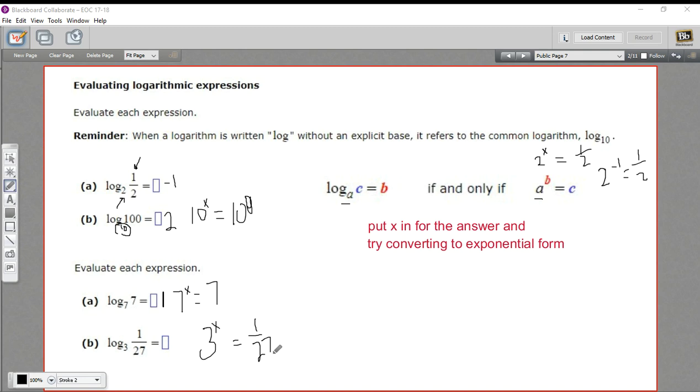27 is 3 cubed, but then it's on the bottom of a fraction. So we're going to take the reciprocal of 3 and then cube it. So that means x equals negative 3, because 3 to the negative 3 power, you'd flip the 3 upside down, you'd get 1 over 3, and then you'd cube that 3, you'd get 1 over 27. So that is a little bit of work with evaluating logarithmic expressions.